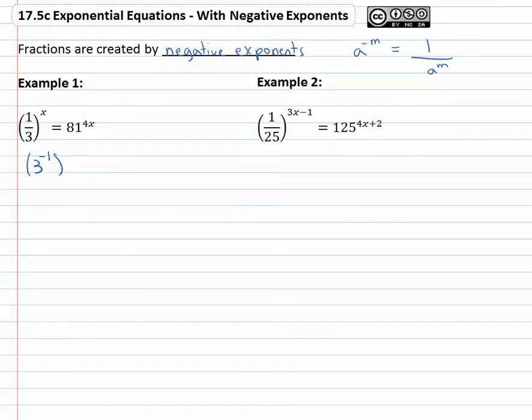Because three to the first is three, the negative moves that down into the denominator. Equals eighty one, we need its prime factorization, dividing by three twenty seven times, dividing by three nine times, dividing by three three times, dividing by three once. That would be three to the fourth power is the eighty one, and we still have the four x on it, and the x on the other half.